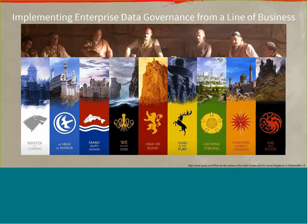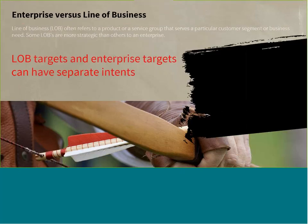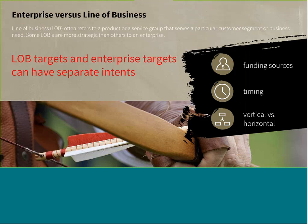Getting back to our specific discussion: implementing enterprise data governance from the line of business — what factors must you consider, and what is different in this scenario? It is absolutely reasonable for a line of business to focus on certain priorities or objectives that may not be in sync with other lines of business. Because the enterprise has a much larger scope, it is very likely that a line of business does not have the same targets as the enterprise.